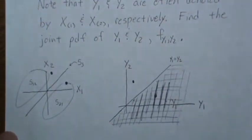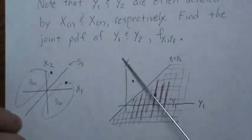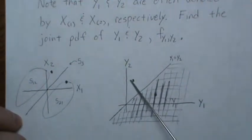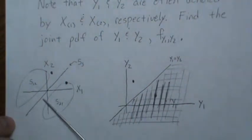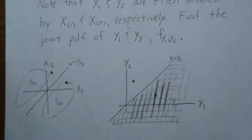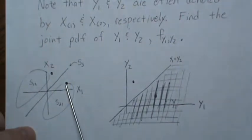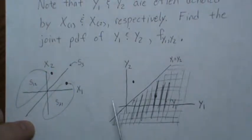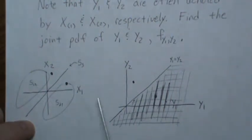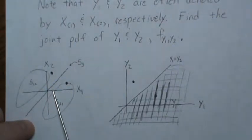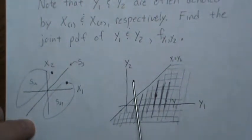Now let's look at the transformation geometrically. y1 always has to be less than y2, so that defines a region. If we pick a point where x1 is large and x2 is small, then x2 is mapped to y1 and x1 is mapped to y2. Conversely, if we choose a point where x1 is small and x2 is large, then x1 is mapped to y1 and x2 is mapped to y2 — both map to the same point in the output region.